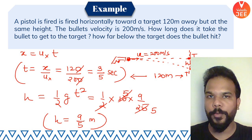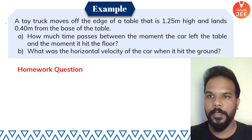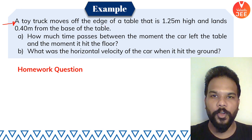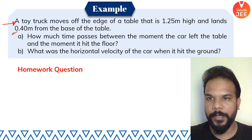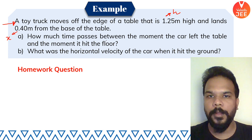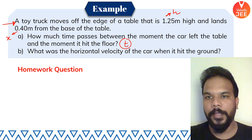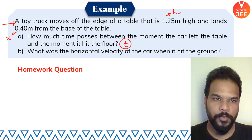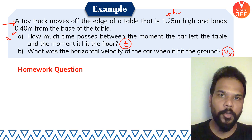Now your homework question: a toy truck moves off the edge of a table 1.25 m high and lands 0.4 m from the base of the table. Find the time between the car leaving the table and hitting the ground, and also find the horizontal velocity of the car. Do tell me your answers in the comment section and I'll revert with the correct answer.